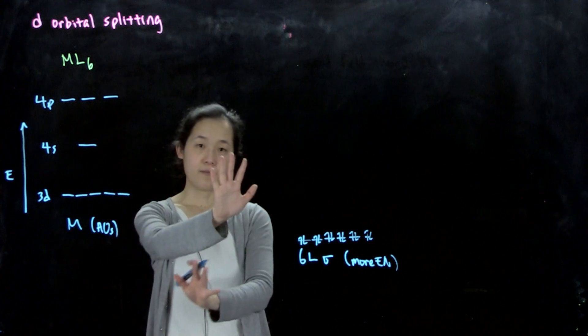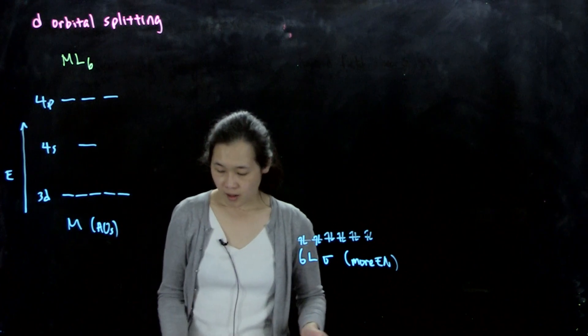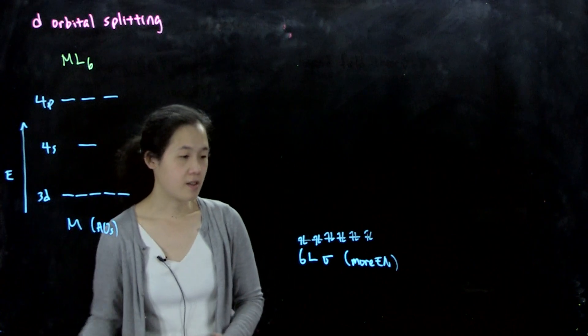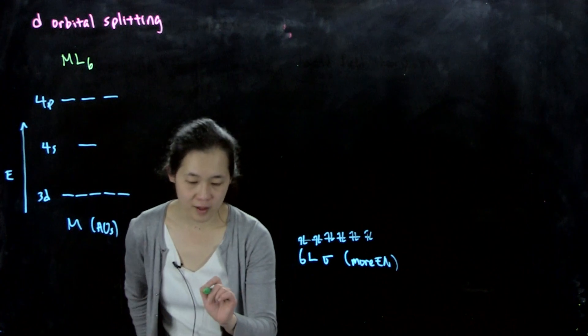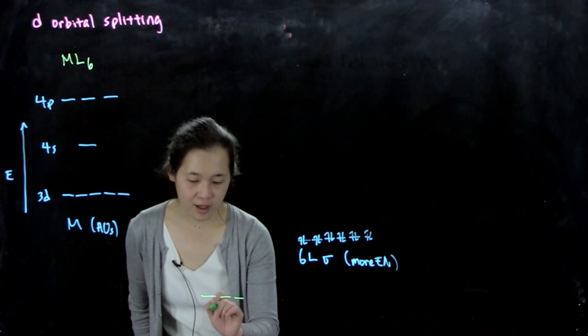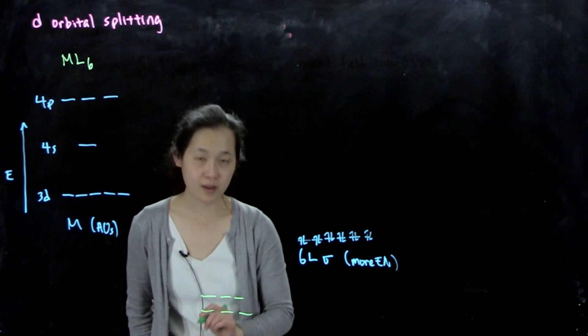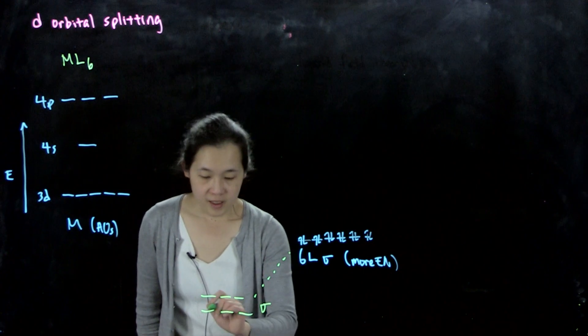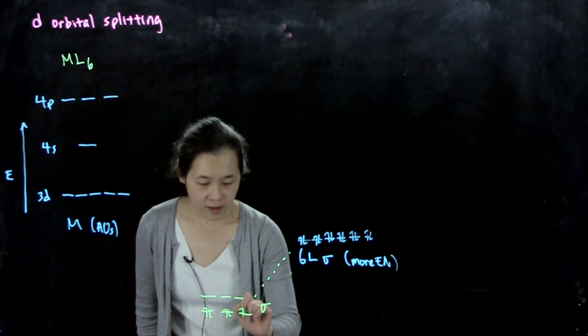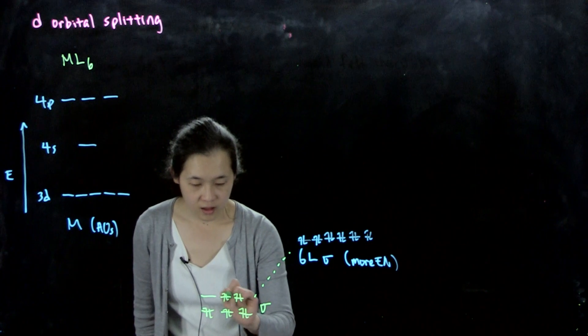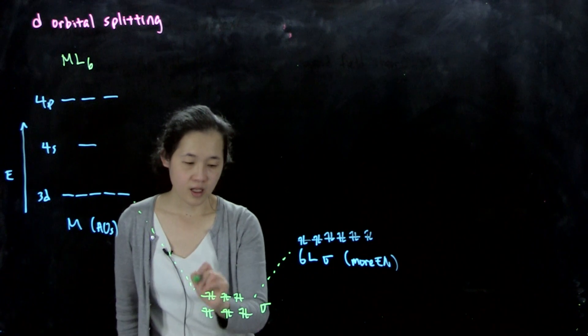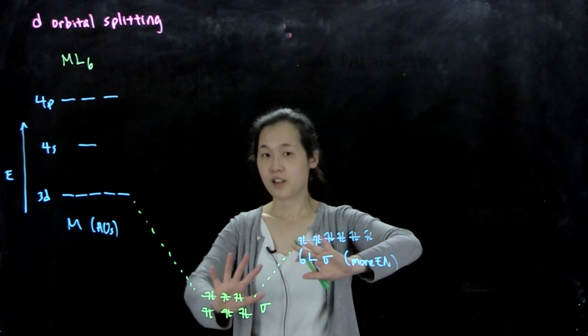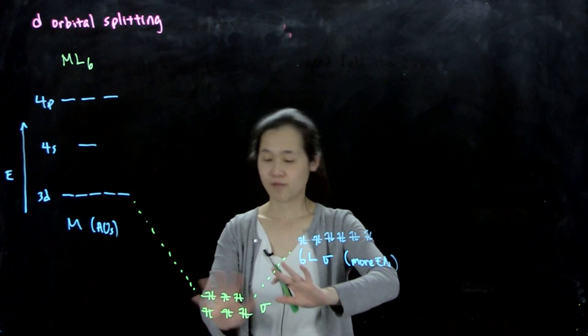When we start interacting them, what ends up happening is that we form bonding-antibonding combinations. We'll form our bonding orbitals, so we form some sigma bonds. The reason we don't worry about them is because these are all filled and they're all close in energy to the ligand, which is more electronegative. These are like ligand-centered electrons, basically.